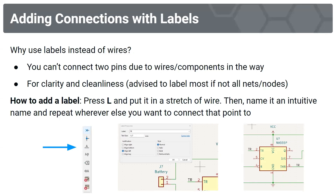Moving on, we're going to add some connections with labels. You can use labels instead of wires if you can't connect two pins due to components being in the way. Labels are also good for clarity and cleanliness, and it's advised to label most if not all nets and nodes. To add a label, press L and place it in a stretch of wire, then give it an intuitive name and repeat wherever else you want to connect that point.